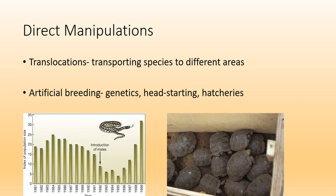We'll also breed based on genetics — artificial breeding, bringing in more genetically diverse individuals. We'll do head-starting like with turtles, raising them to a certain point and then releasing them. We also do hatcheries — at Wolf Creek Dam in Kentucky they grow fish up to fingerling size and then release them into native waters. Here's a population of snakes where genetic diversity was going down along with their numbers. Once they introduced more genetic diversity, their population went up higher than it had been in 20 years.